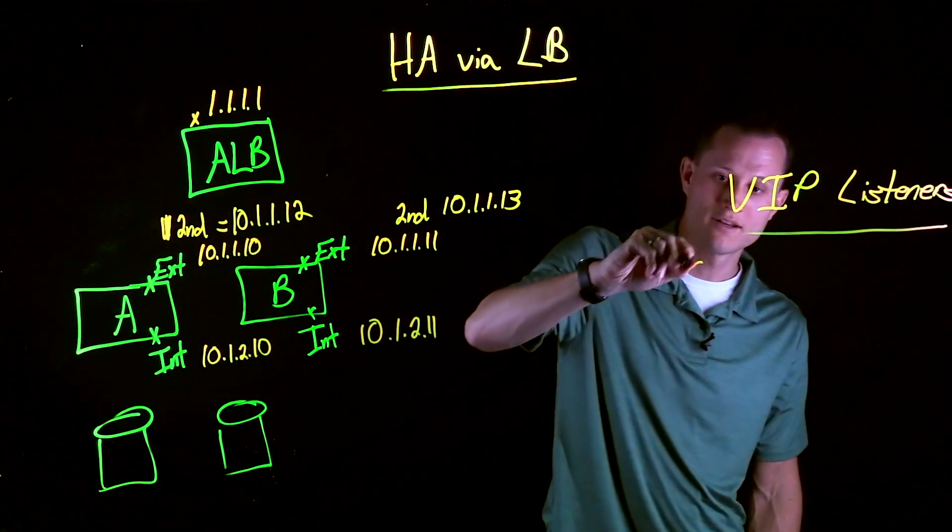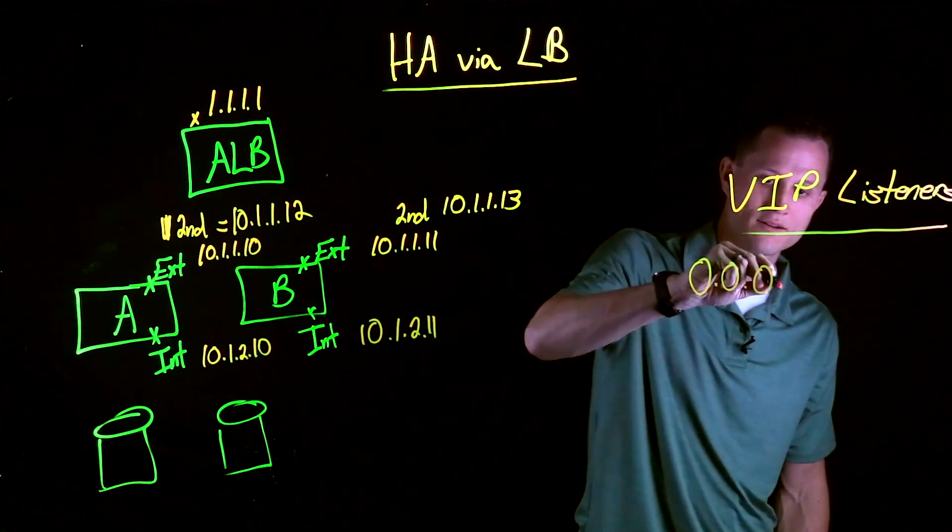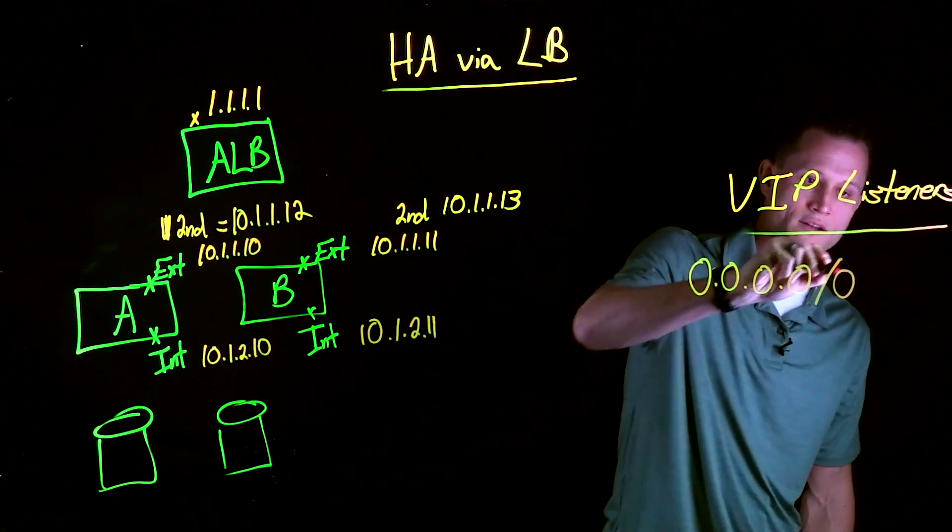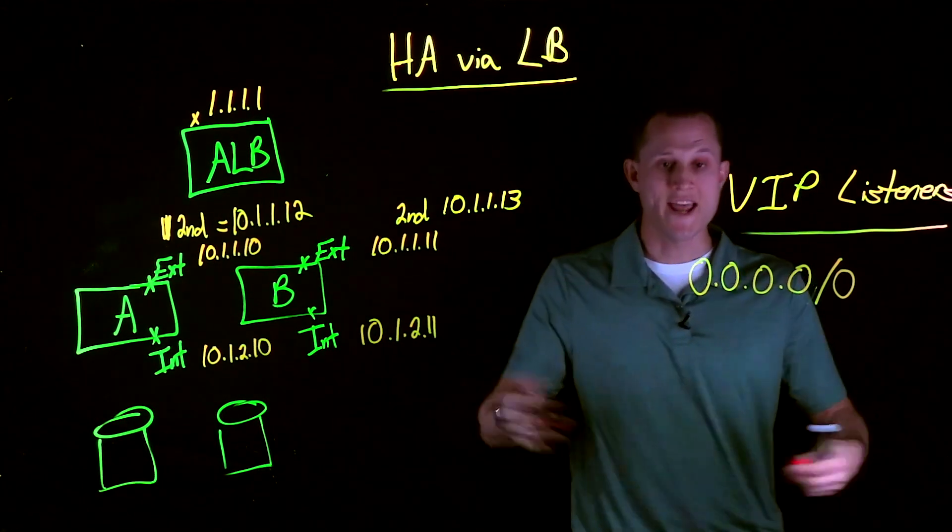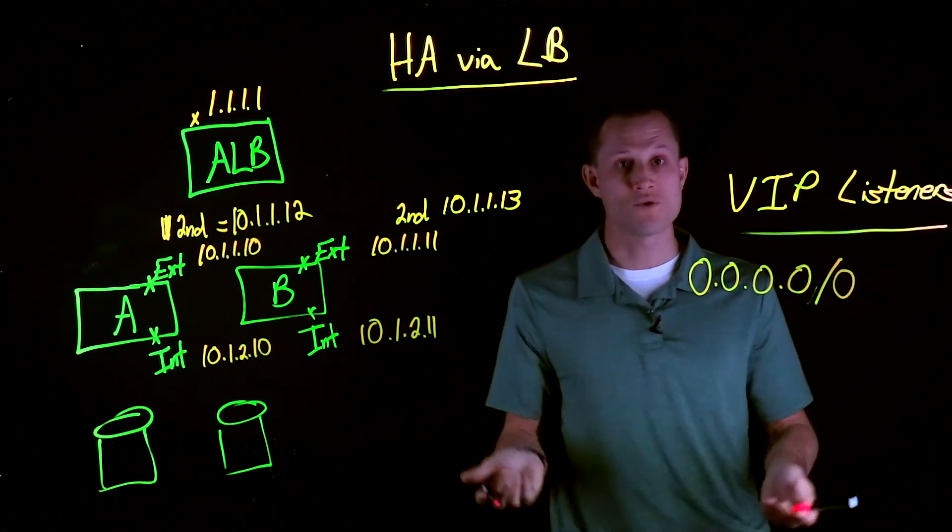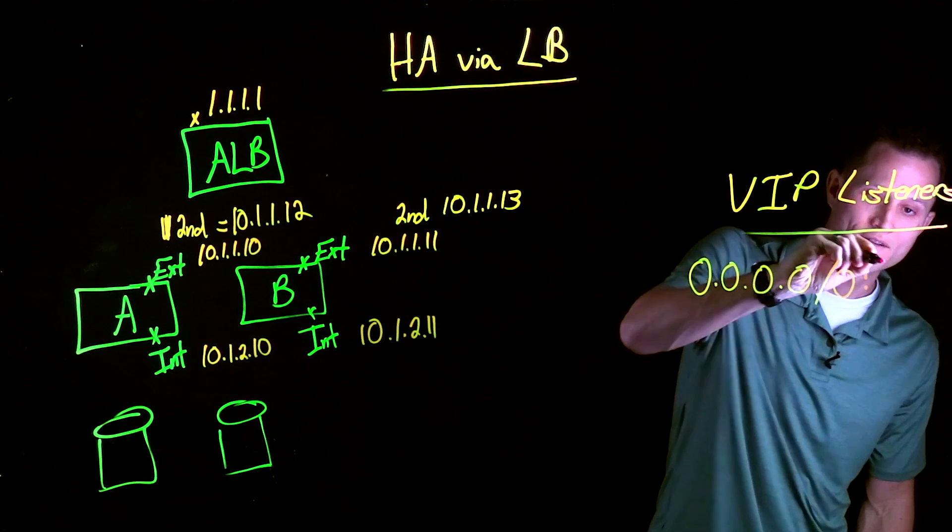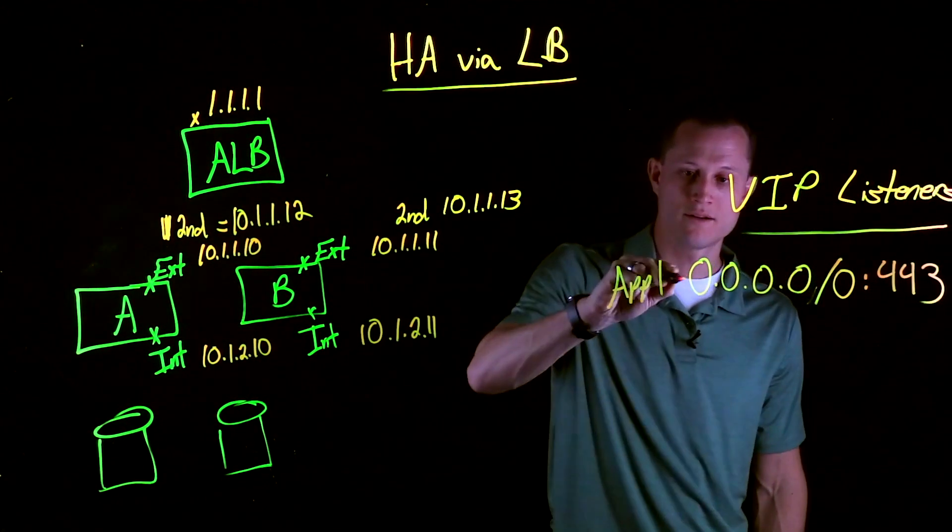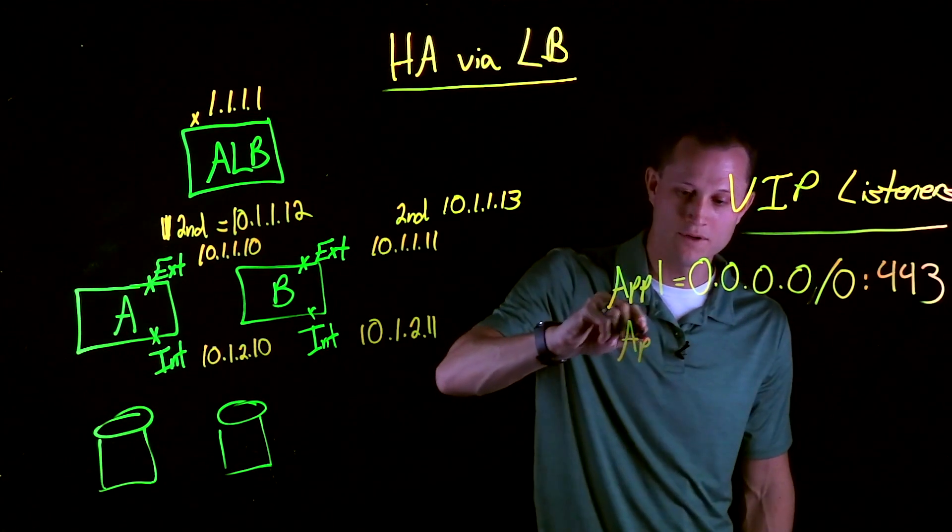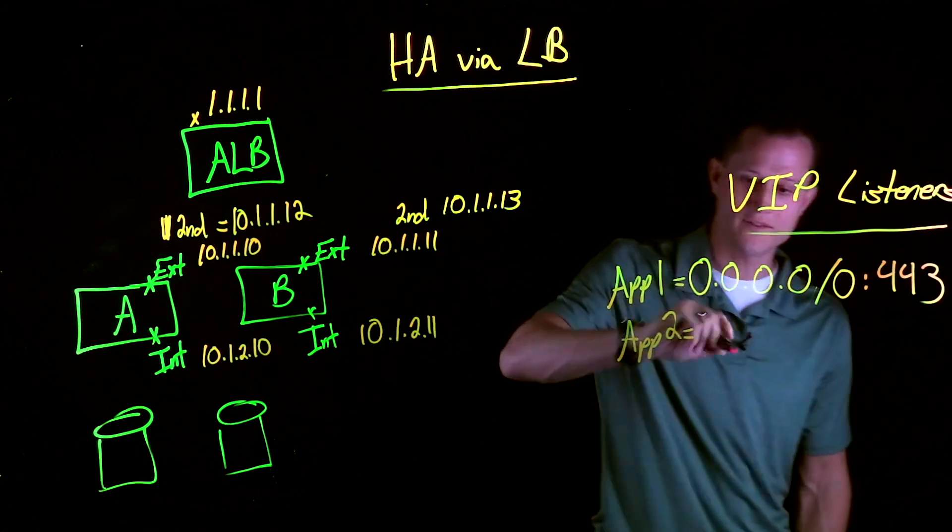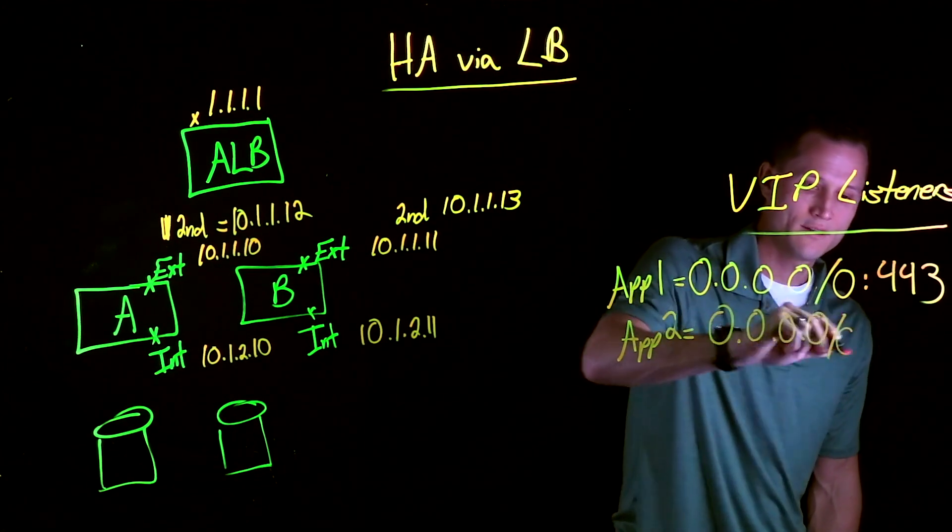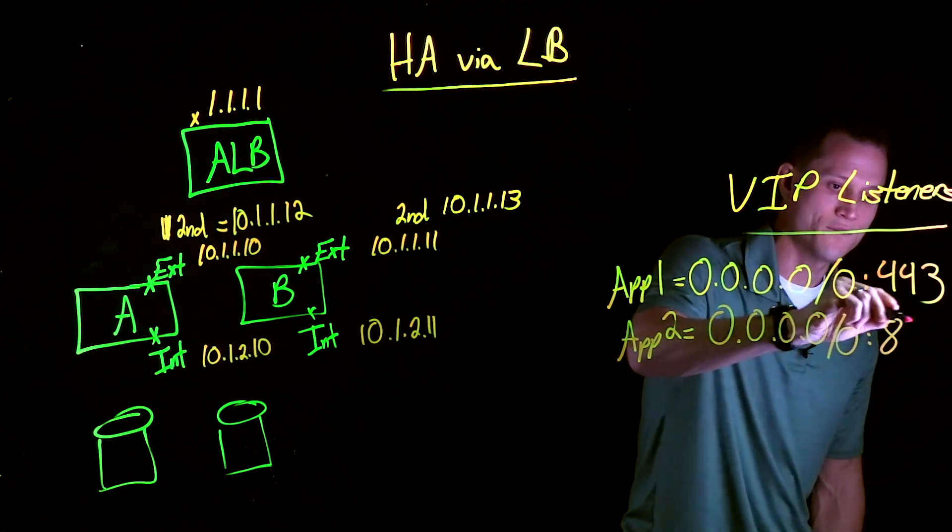We have the option to do a wildcard. Now for app A, app B, app C, maybe there's different ports. Maybe you have a port 443. This could be app 1. Maybe for app 2, you have the same thing on a different port. Wildcard, listening on port 8443.